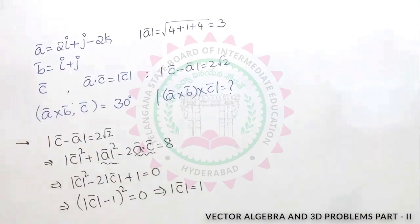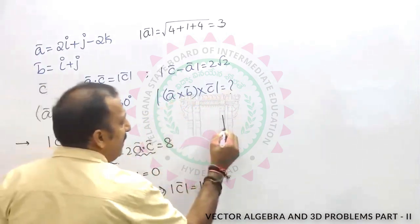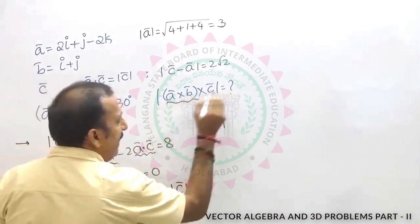Now what we need to find? Modulus of a cross b cross c. It is in the form of a cross b.